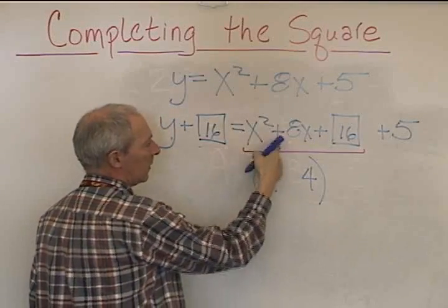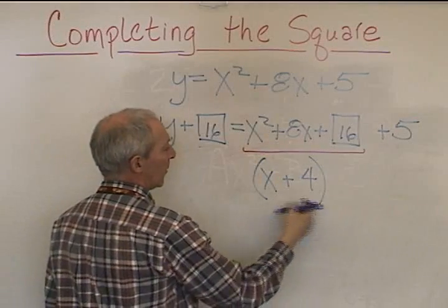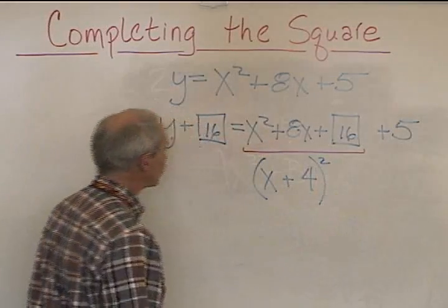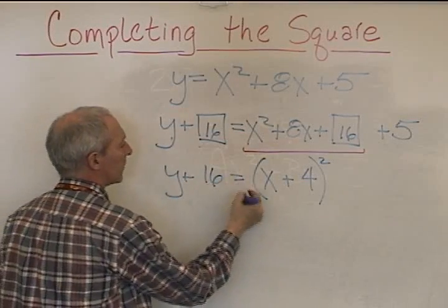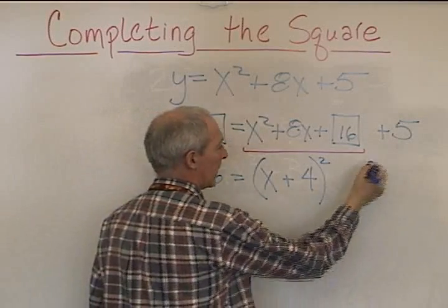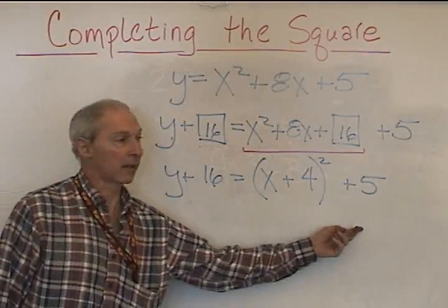We have the x here. This is positive. So this is a positive inside the binomial. And it's all squared. y plus 16 is equal to x plus 4 quantity all squared plus 5. So we've restated it like this.